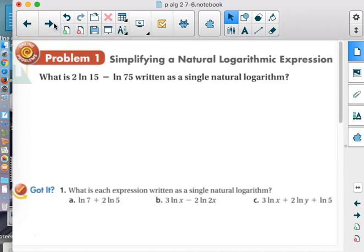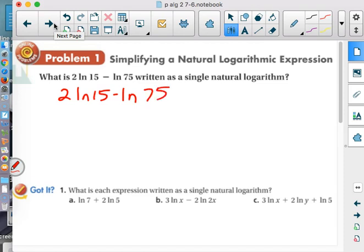So today, we're going to be strictly on solving again. But now we're going to have ln on there. So we're going to condense, we're going to expand, and we're going to try and solve. This one says, what is 2 natural log of 15 minus natural log of 75, written as a single logarithm. Most books will just say condense.